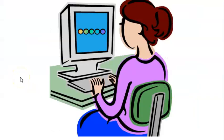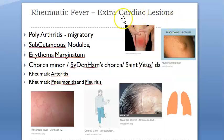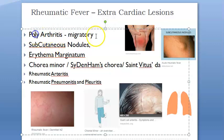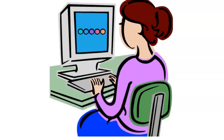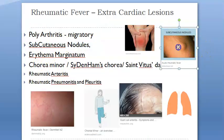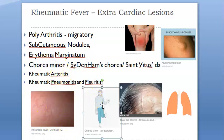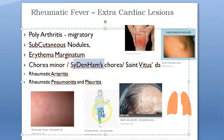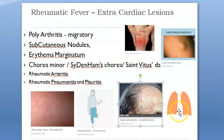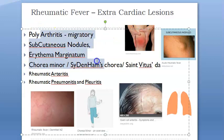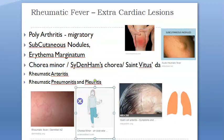Now for extra-cardiac lesions: joints can be affected, causing migratory polyarthritis — multiple joints involved one after another. However, you should not wait for migration to happen; suspect rheumatic fever early. Skin involvement includes subcutaneous nodules and erythema marginatum. The central nervous system involvement causes Sydenham's chorea — also called St. Vitus' dance. There can also be rheumatic arteritis, pneumonitis, and pleuritis. The four important ones are polyarthritis, subcutaneous nodules, erythema marginatum, and chorea.